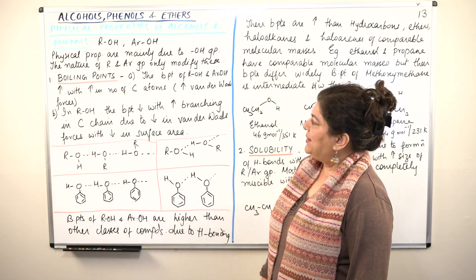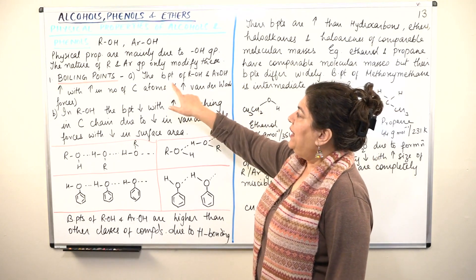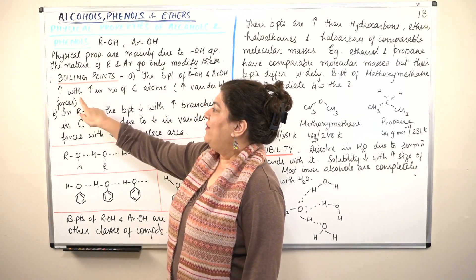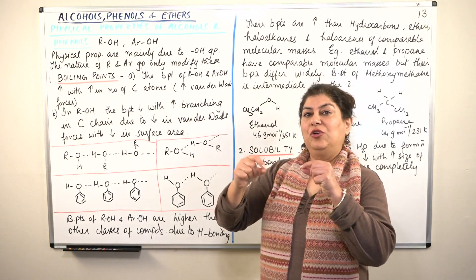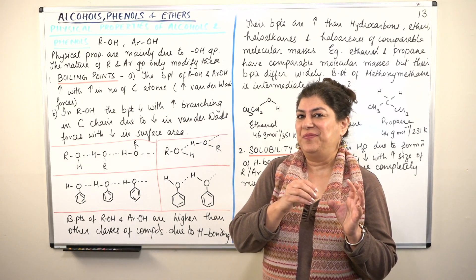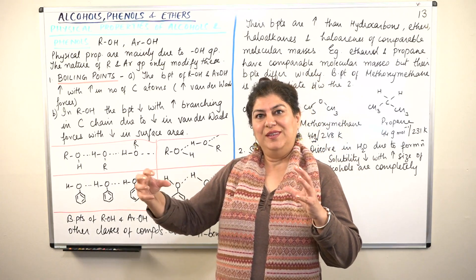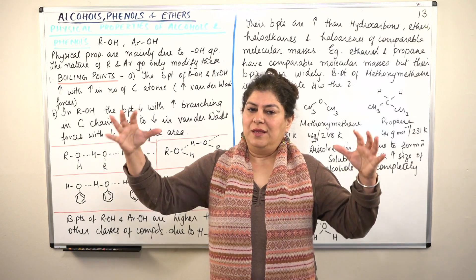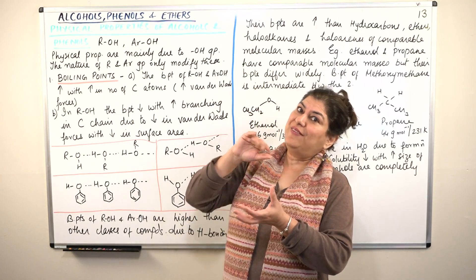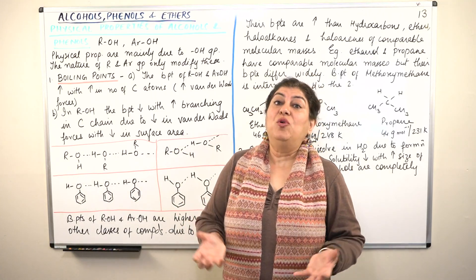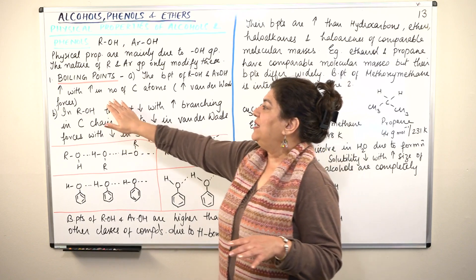The first property is boiling point. The boiling points of ROH (alcohols) and ArOH (phenols) increase with an increase in the number of carbon atoms. As the alkyl group becomes bigger — methane, ethane, propane, butane are gases, but pentane turns into a liquid — as the carbon chain increases, the compound becomes heavier and heavier. The boiling point of alcohols and phenols increases with increase in the number of carbon atoms.